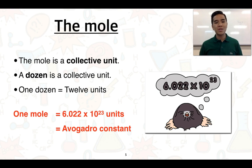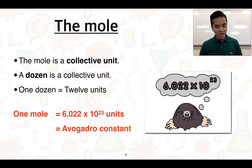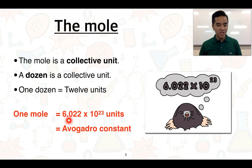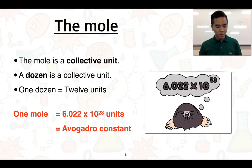To put it simply, the mole is a collective unit, similar to how we use the word dozen, because the dozen represents 12 of a particular object. The dozen is a collective unit, and the mole is also a collective unit — it's just that one mole is equivalent to a much greater number. One mole is equivalent to 6.022 × 10²³ of a particular unit, which we also refer to as the Avogadro constant.